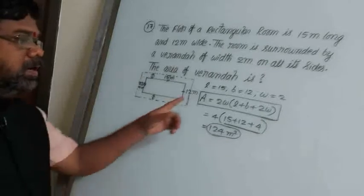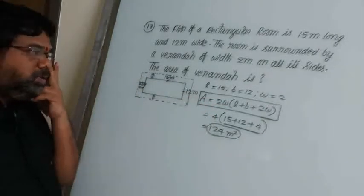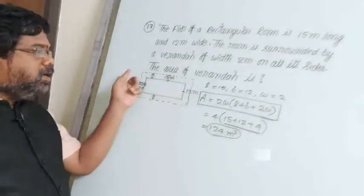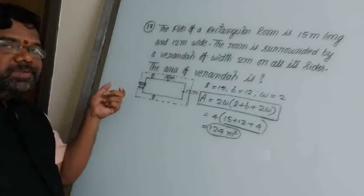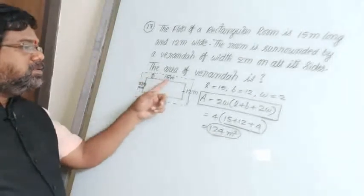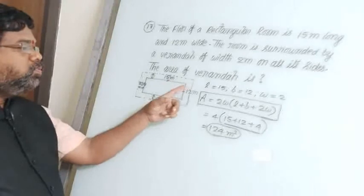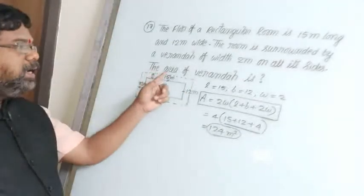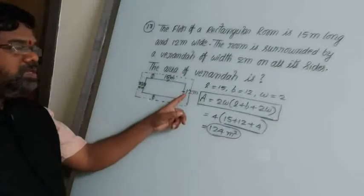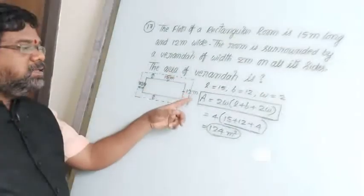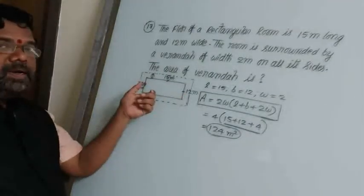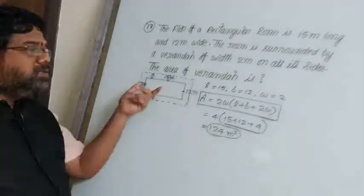The key point is Area = 2W × (L + B + 2W). Alternatively, use larger rectangle area minus smaller rectangle area. The larger rectangle has length 15 + 4 = 19 and breadth 12 + 4 = 16. So 19 × 16 minus 15 × 12 gives the path area.